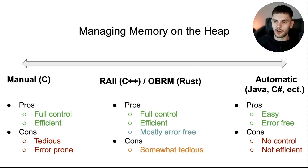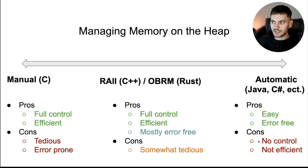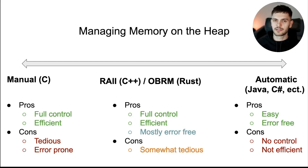Now let's talk about how these strategies relate to Rust. From a programmer's perspective, automatic memory management would be nice, but Rust is a systems programming language that has to be extremely efficient, so automatic memory management is ruled out. Rust is also a memory-safe language, so manual memory management is ruled out because it's error-prone. That leaves us with the strategies in the middle, which achieve both efficiency and memory safety. In the next couple of videos, I'll be going over how RAII and OBRM work and comparing C++ to Rust in terms of memory management.